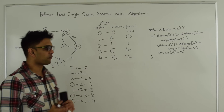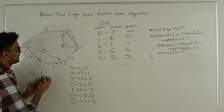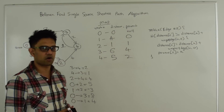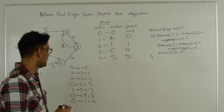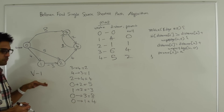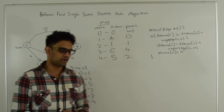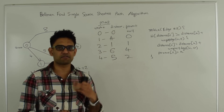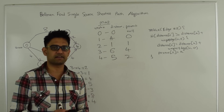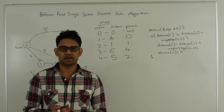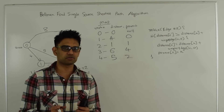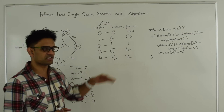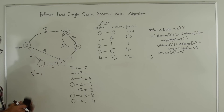We have done 4 repetitions and found the shortest distances and the paths. After completing V-1 repetitions, we do one more final iteration with the same edges. If the distance reduces even further in that iteration, it means there is a negative weight cycle in the graph. In this case going through the graph again is not going to change anything because there is no negative weight cycle here.